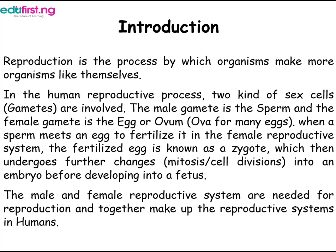the fertilized egg is known as a zygote, which then undergoes further changes — mitosis, cell divisions — into an embryo before developing into a fetus. The male and female reproductive systems are both needed for reproduction and together make up the reproductive systems in humans.